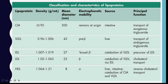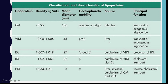Classification and characteristics of lipoproteins by density: Chylomicrons have the lowest density of about 0.95 and are placed at the top layer. Their source is the intestine, and their role is to transport exogenous (dietary) triglycerides to various tissues. VLDL has a density of 0.96 to 1.006 and is called pre-beta lipoprotein. VLDL is synthesized in the liver and transports endogenous triglycerides synthesized in the body.